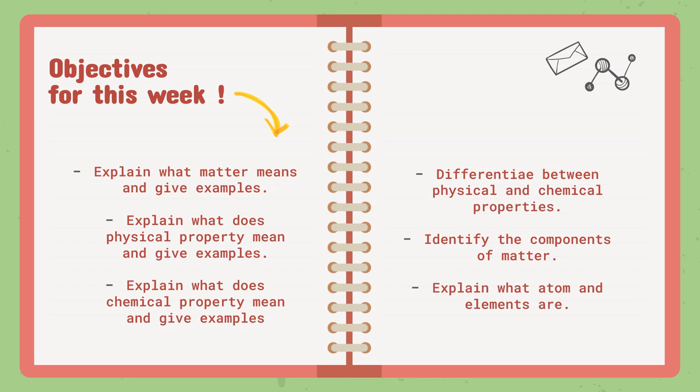We will differentiate between physical and chemical properties. Then we will identify the components of matter. There are a few components of matter that you will get to know — specifically atoms and elements. We will know their meanings, give examples, and understand more about what matter is and its components.